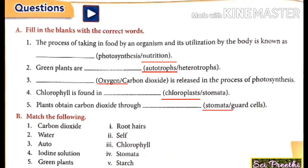Now we will discuss the match the following. The first question: carbon dioxide — plants obtain carbon dioxide through stomata. The second question: water — plants absorb water through the roots. The third question: auto — auto means self, so green plants are examples of autotrophs.